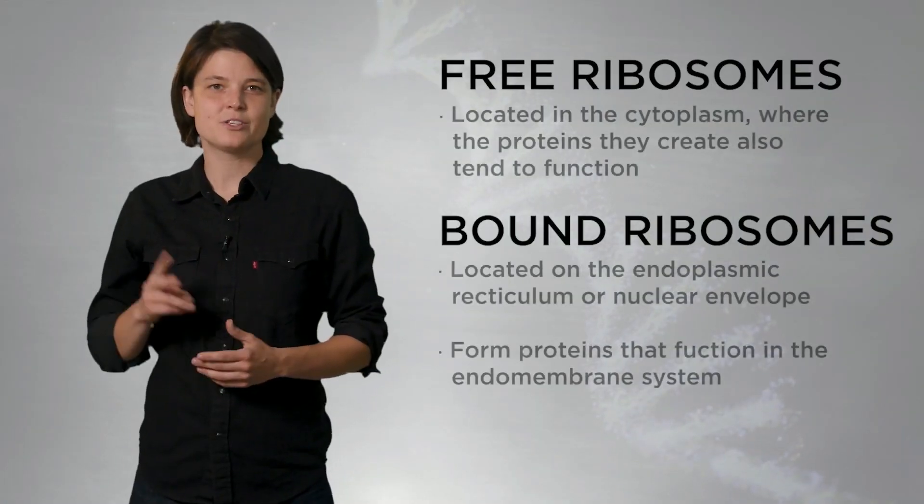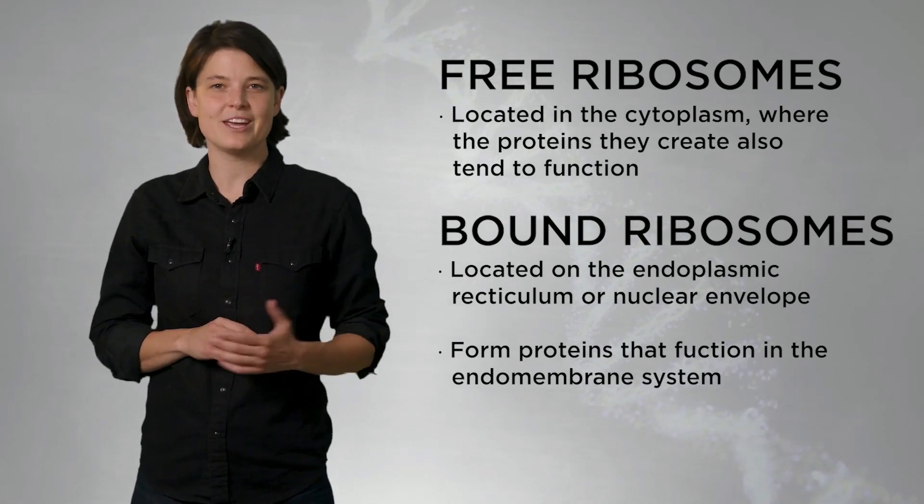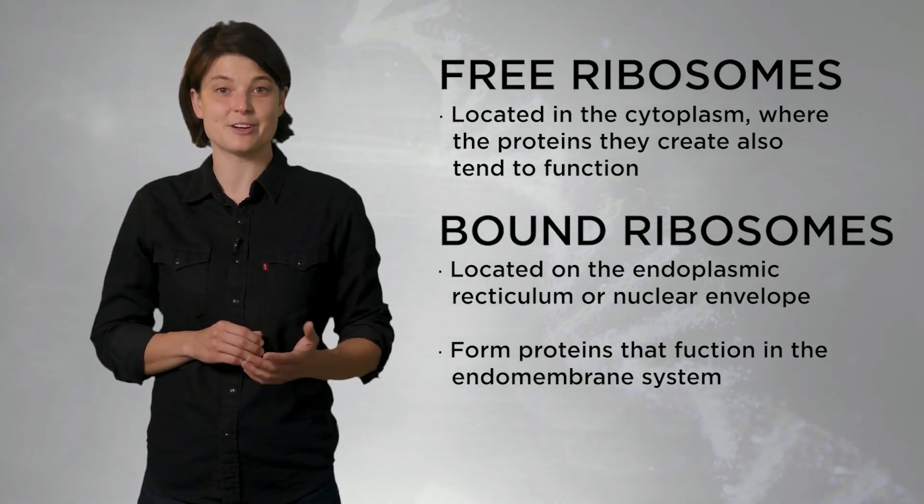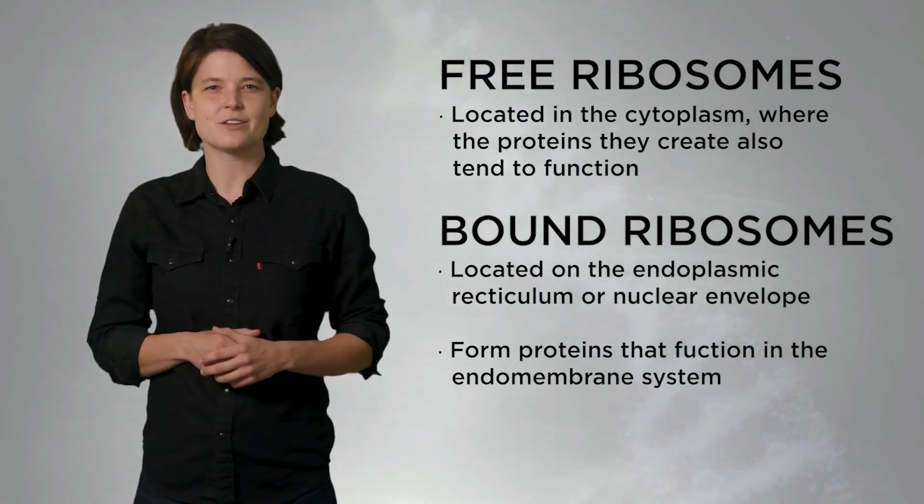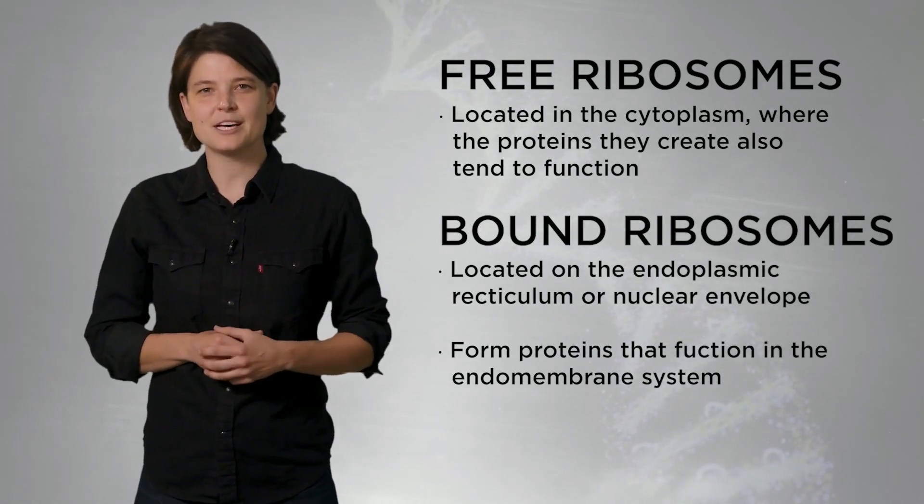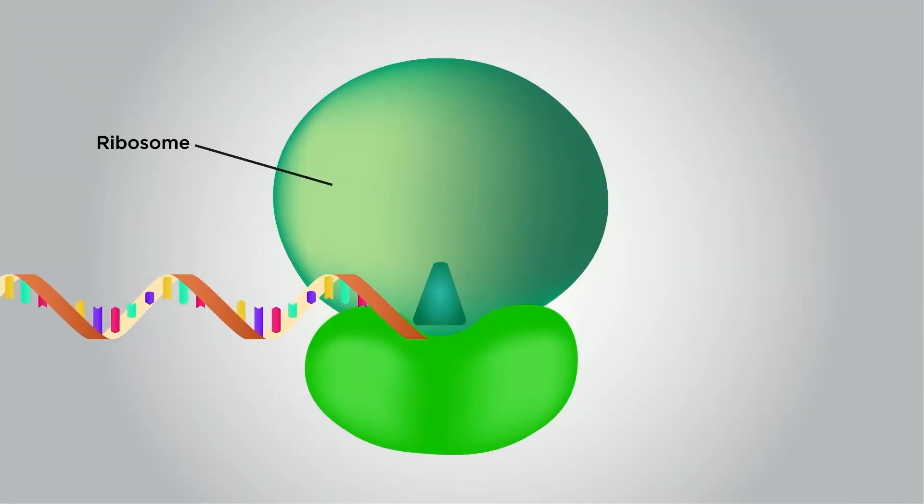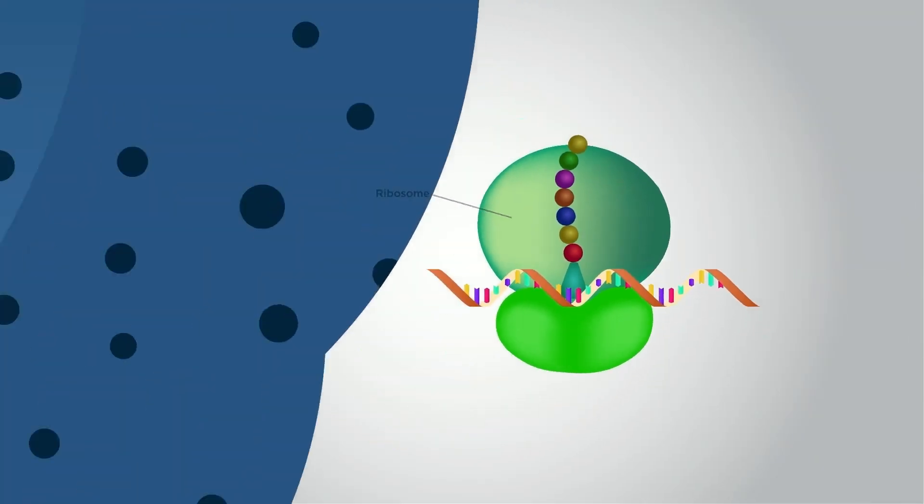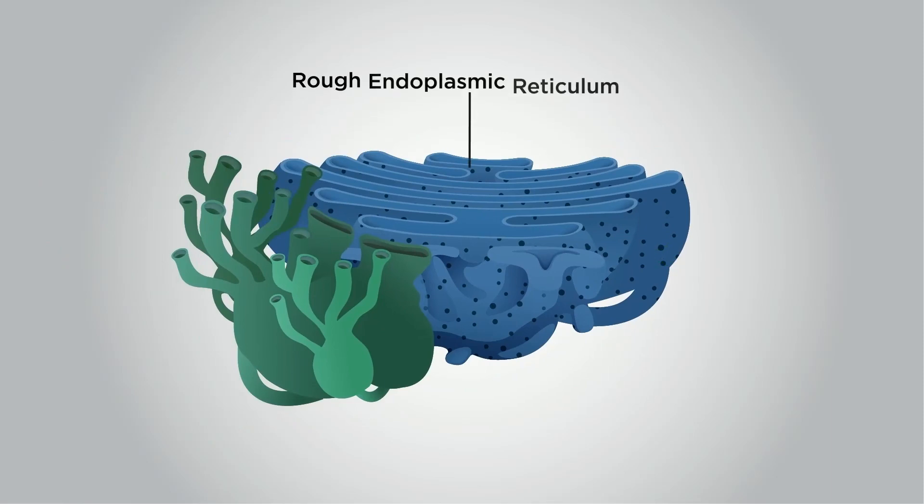Ribosomes fall into two categories. Free ribosomes are located in the cytoplasm, where the proteins created by free ribosomes tend to function. Bound ribosomes exist on the nuclear envelope or on the endoplasmic reticulum, in which case it becomes the rough endoplasmic reticulum, as the presence of ribosomes gives the endoplasmic reticulum a coarse appearance under the microscope. These bound ribosomes create proteins that will be used within membrane-bound organelles in the cell, or packaged for use outside of the cell in a process called secretion.